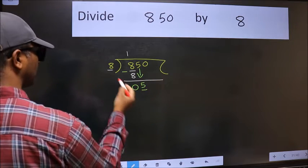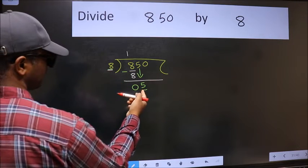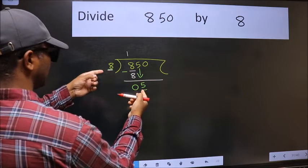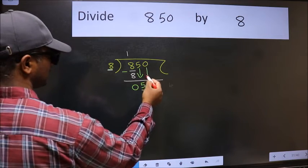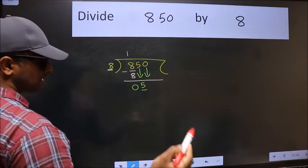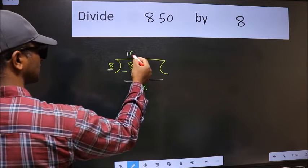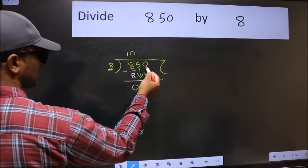Now here we have 5 and here 8. 5 is smaller than 8, so we should bring down the second number. The rule to bring down the second number is we should put 0 here, then only we can bring this number down.